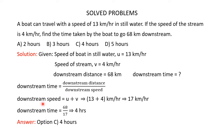Downstream speed equals speed of the boat in still water plus speed of the stream: 13 plus 4 equals 17 km/h. Downstream time equals 68 divided by 17, which is 4 hours. So the boat takes 4 hours to cover 68 kilometers downstream. The correct answer is option C, 4 hours.